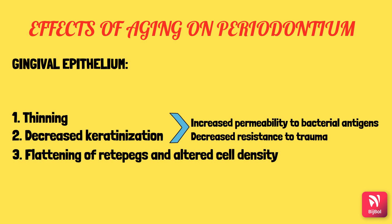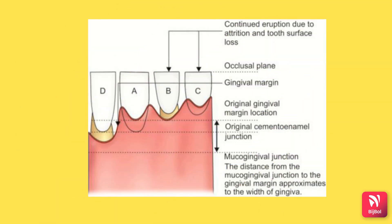There is controversy about whether gingival recession occurs with aging. To understand this, we need to know when gingival recession occurs and when it does not. This diagram explains the relationship of the gingival margin with the crown and root surface. In picture A, there is a normal relationship with the gingival margin 1 to 2 mm above the cemento-enamel junction. In picture B, there is wear of the incisal edge and the tooth is continuously erupting to maintain occlusal contact, but the gingiva stays in the same position, so clinically we can appreciate gingival recession.